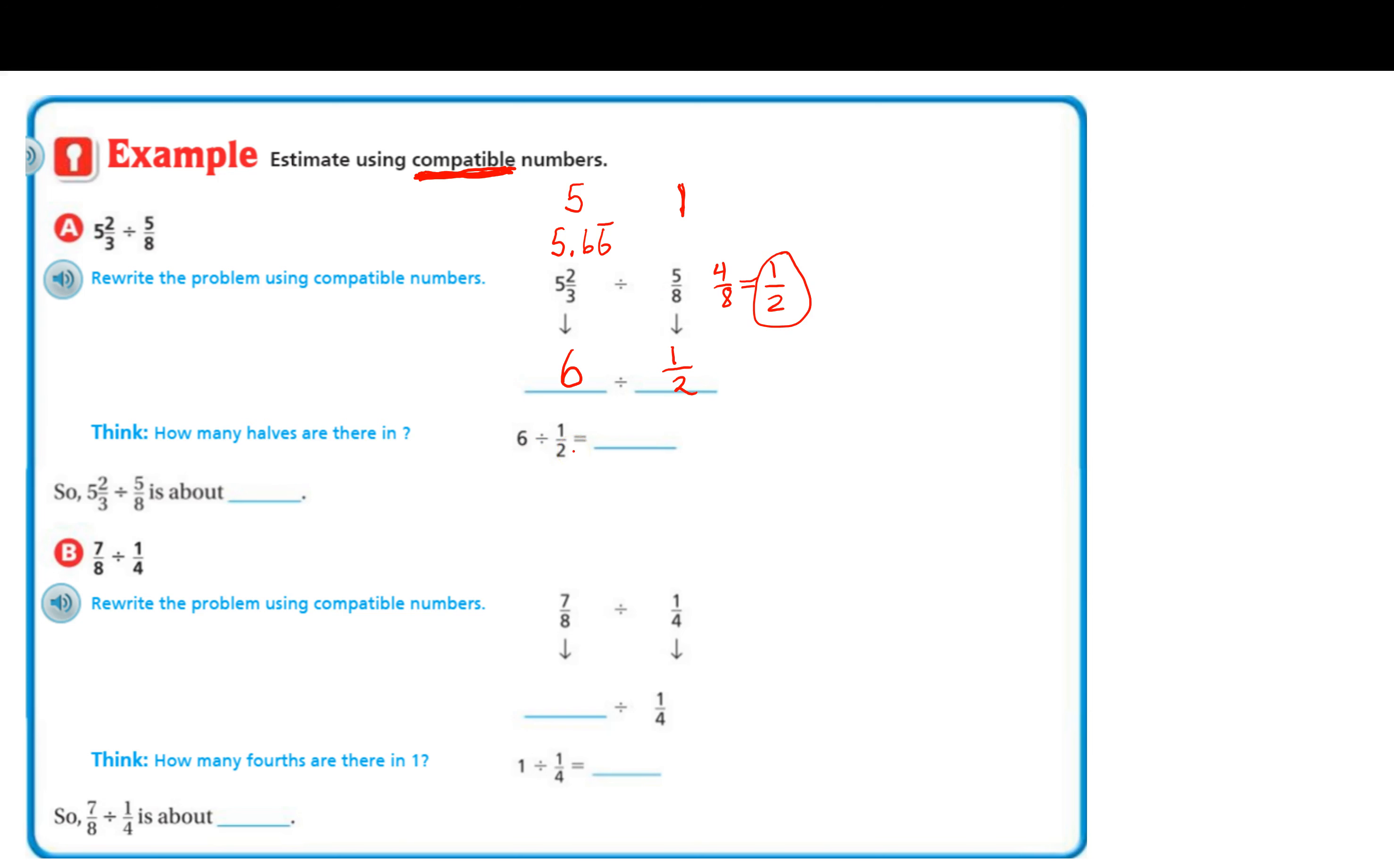Well, how many halves are there in one whole? One whole has two halves. So six wholes is going to have twelve halves, right? Because there's going to be two halves in every one. Six times two is twelve.